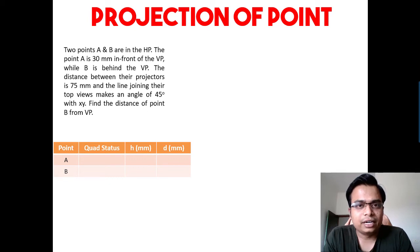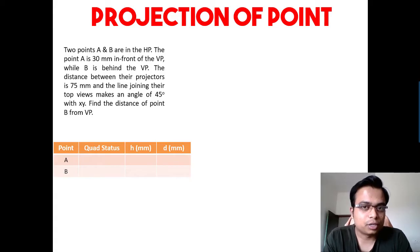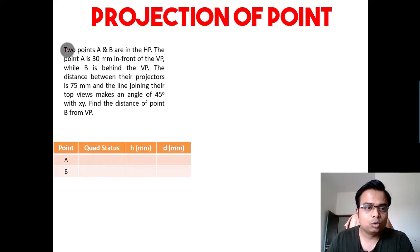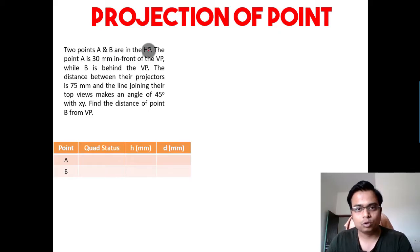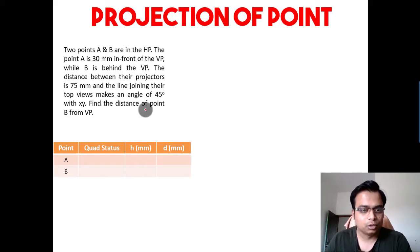Hi everyone, this is Manas, your friend and tutor. Let's begin with another problem in this reloaded version of the video series on projection of points. Two points A and B are in the HP, so these two points are lying in the HP. That means their distances from the horizontal plane are zero.